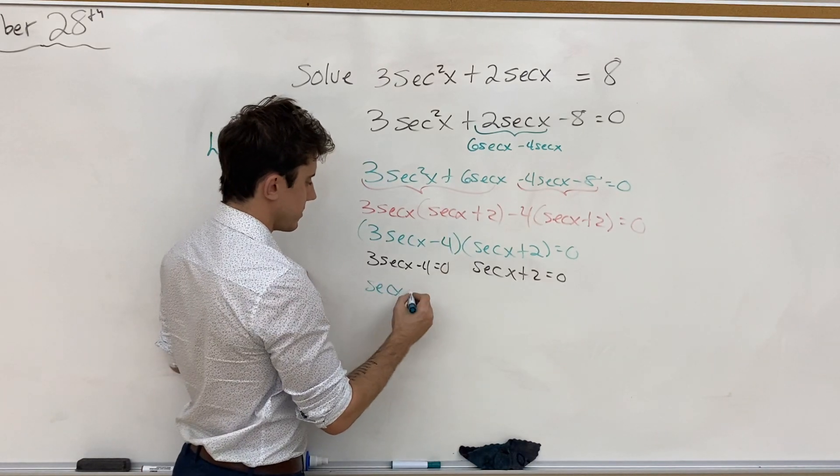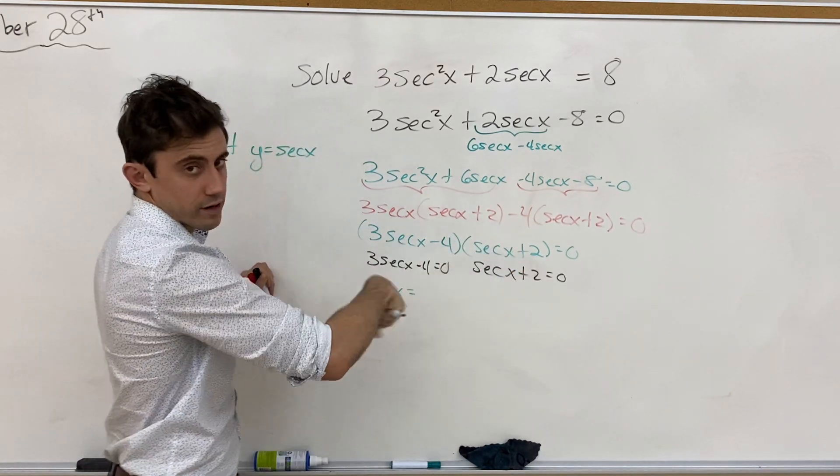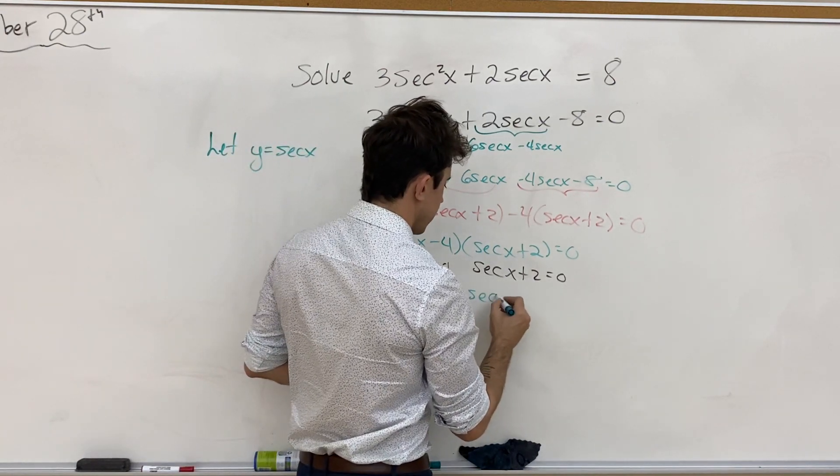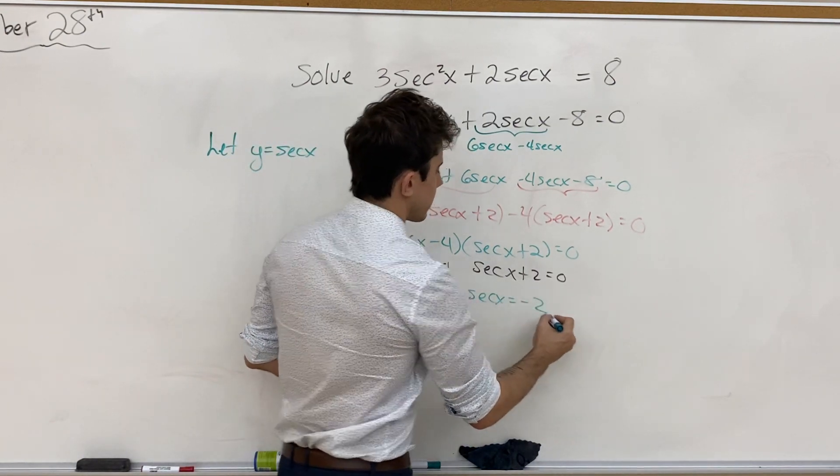Secant x is equal to, add 4, divide by 3, so 4 thirds. And we have secant x is equal to negative 2.